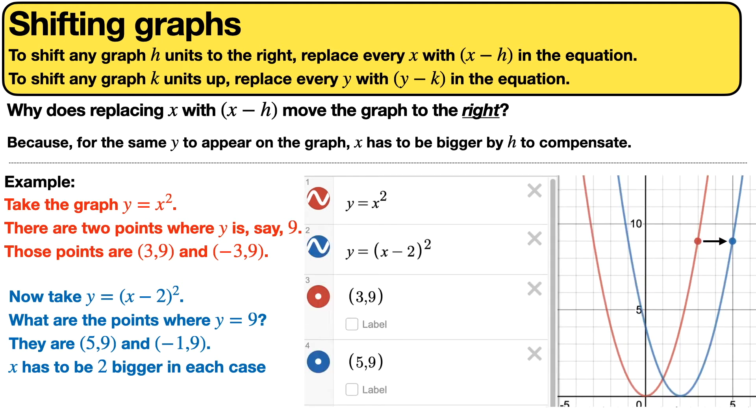Here's an image that shows this. The two points on that picture both have a y value of 9, but the blue x value has to be 2 bigger to compensate for the fact that there's an (x-2) in the equation instead of an x.